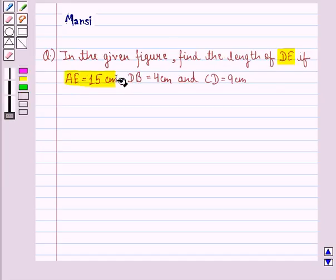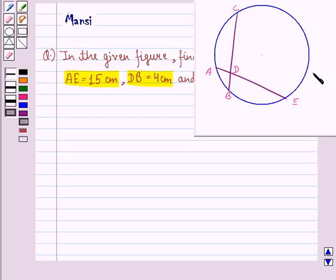If AE is 15 cm, DB is 4 cm and CD is 9 cm. Now this is the figure given to us.